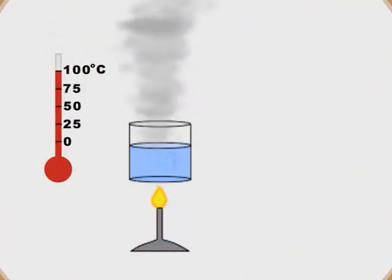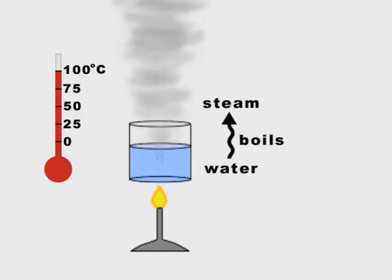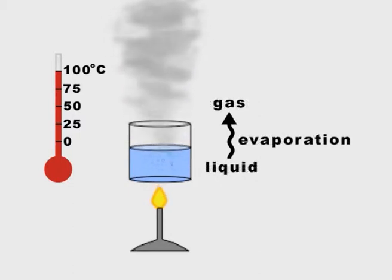If you heat liquid water up to 100 degrees Celsius, it begins to boil as the water turns into steam. Evaporation is the change that occurs when material turns from a liquid into a gas.